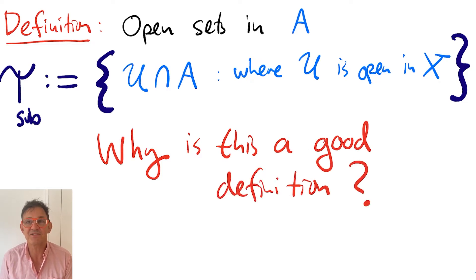Is it a good definition because we can't think of another definition? Should this be the subspace topology because the authorities tell us, trust us, this is the definition that works when we use it in practice?